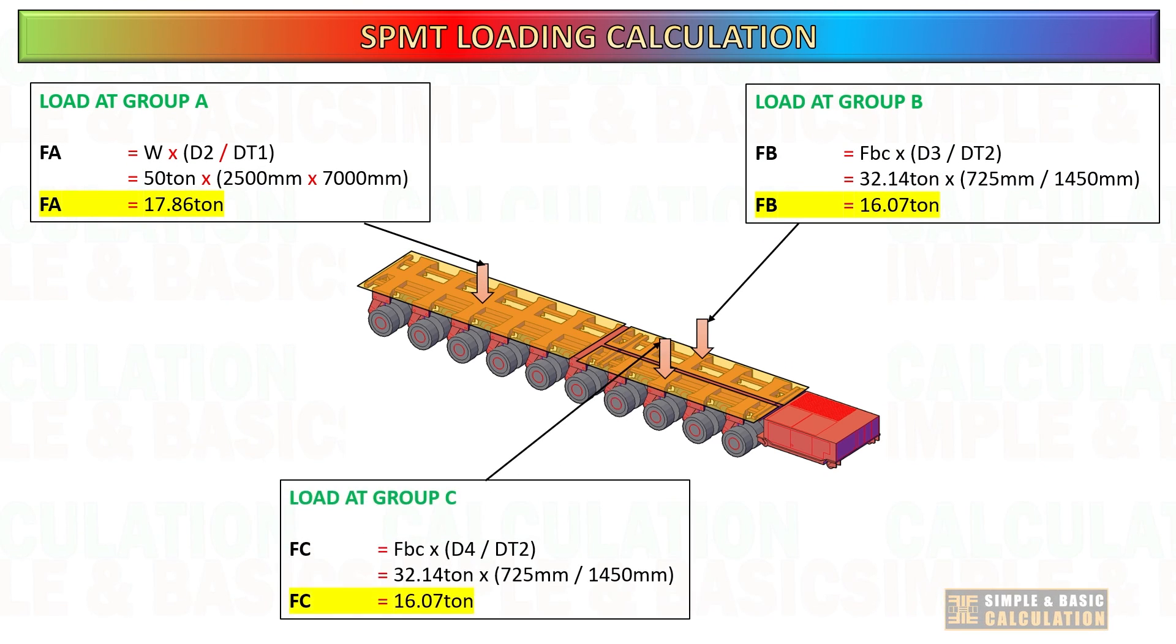Based on the computation you now have all the details regarding the loading for each grouping. The importance of this calculation is to prevent overloading of specific axles and also for the stability of your transportation. It's often advisable to incorporate a safety margin into your calculations to account for unforeseen factors or variations in load distribution.